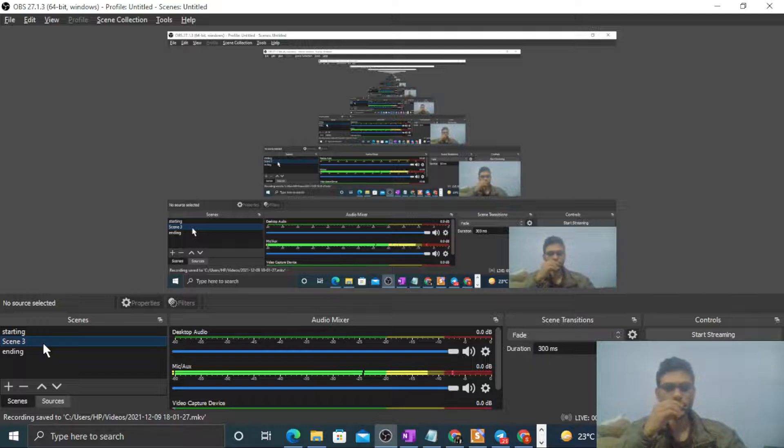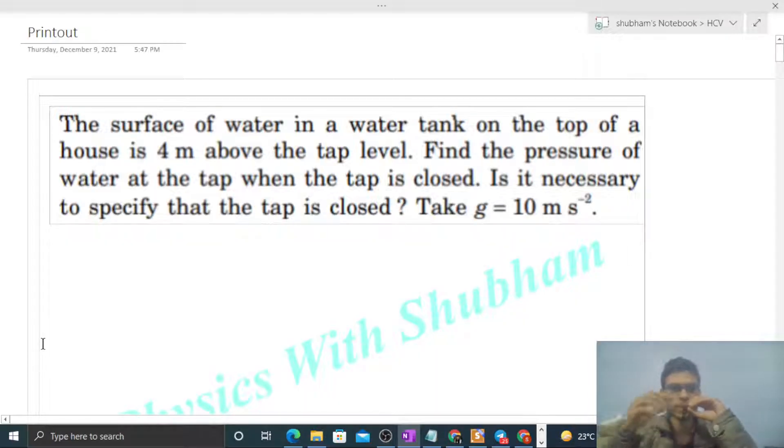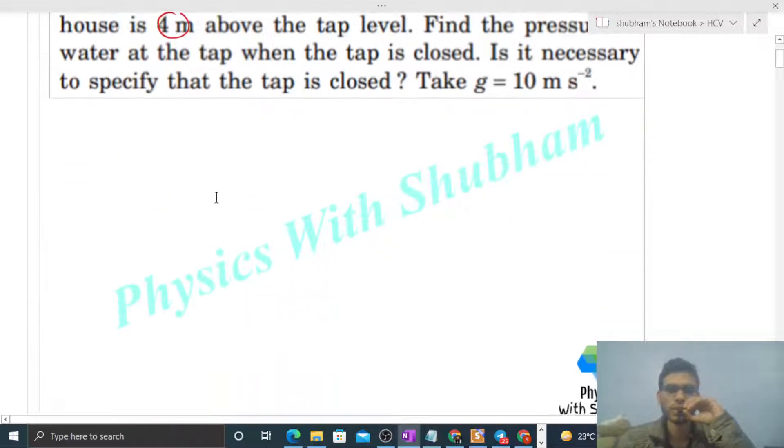Okay, hi everyone. So today let's discuss one interesting problem. It says the surface of water in a water tank on the top of a house is four meters above the tap level. Find the pressure of water at the tap when the tap is closed. Is it necessary to specify that the tap is closed?